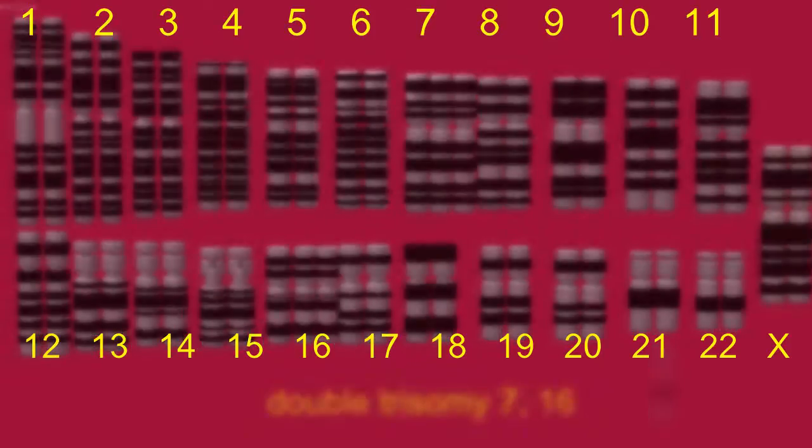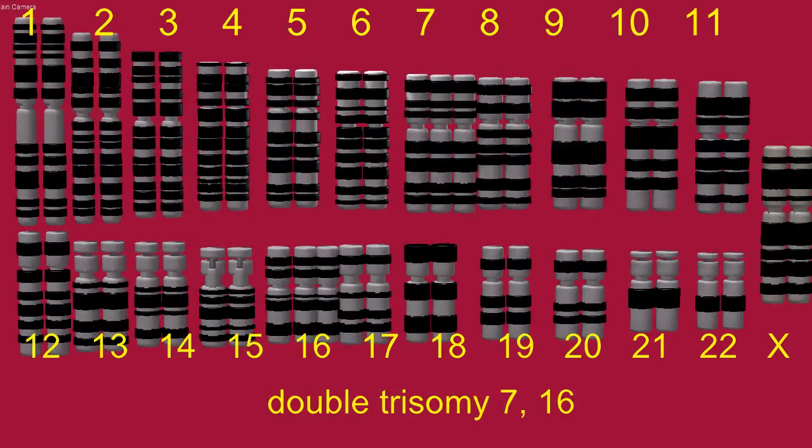There are cells which possess trisomies affecting two different chromosomes. The double trisomy 7,16 possesses extra copies of chromosome 7 and 16.